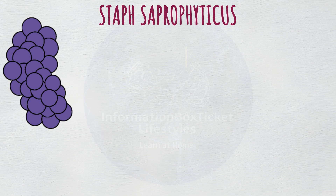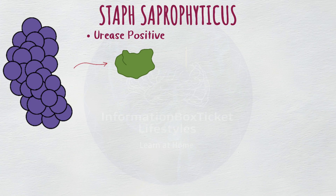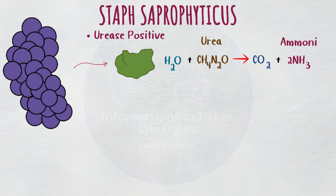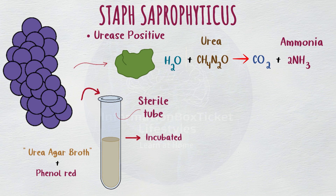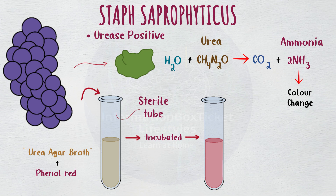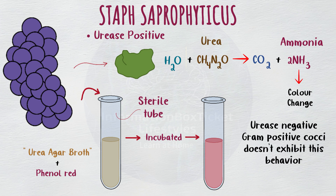Additionally, Staph saprophyticus is urease-positive, which means that it generates the urease enzyme, which splits urea into carbon dioxide and ammonia. A pure sample of bacteria from the culture can be tested for this by placing it in a sterile tube along with phenol red and urea agar broth, then leaving the combination to incubate. Urease causes urea to split into carbon dioxide and ammonia, and the liquid then turns bright pink instead of orange-yellow when ammonia is added.